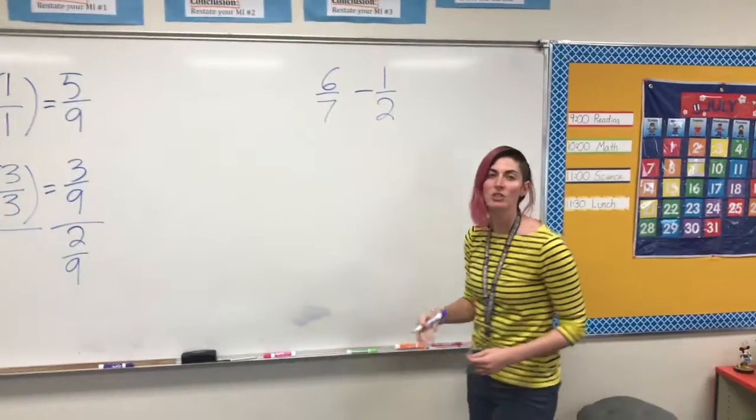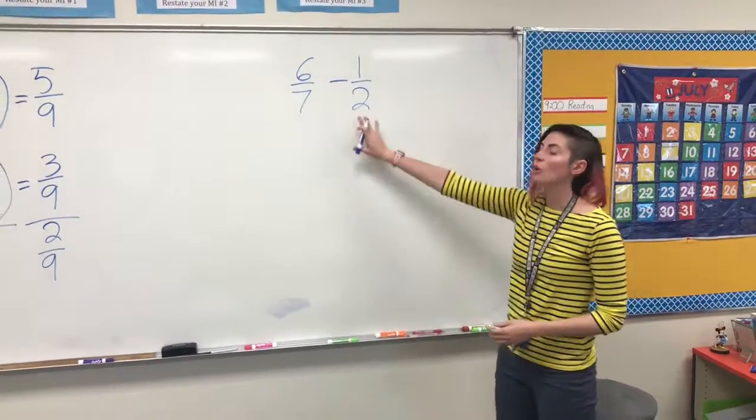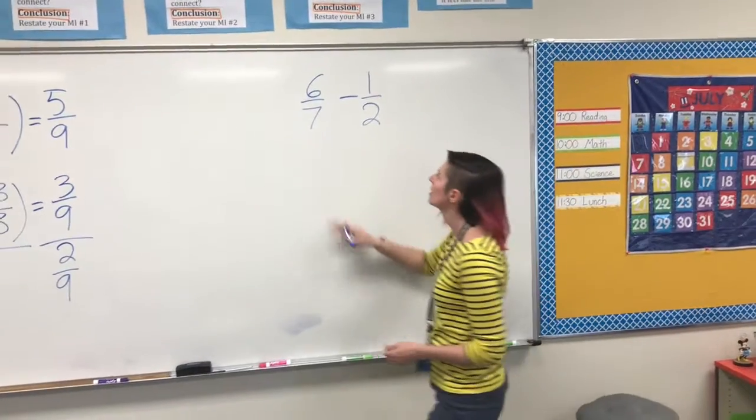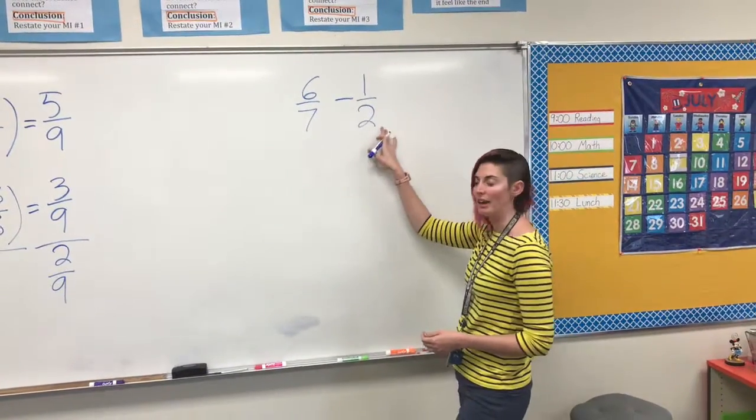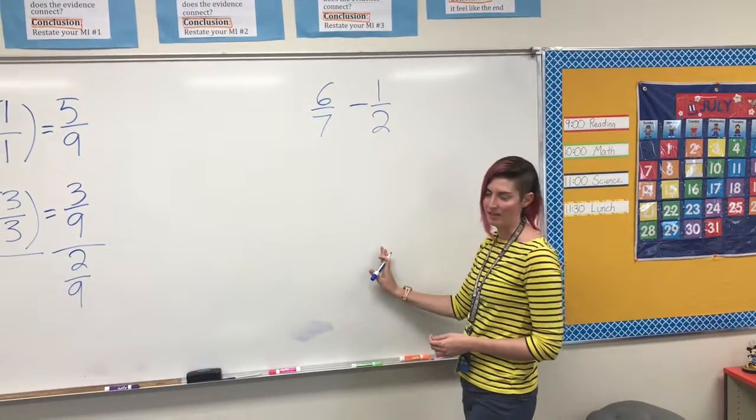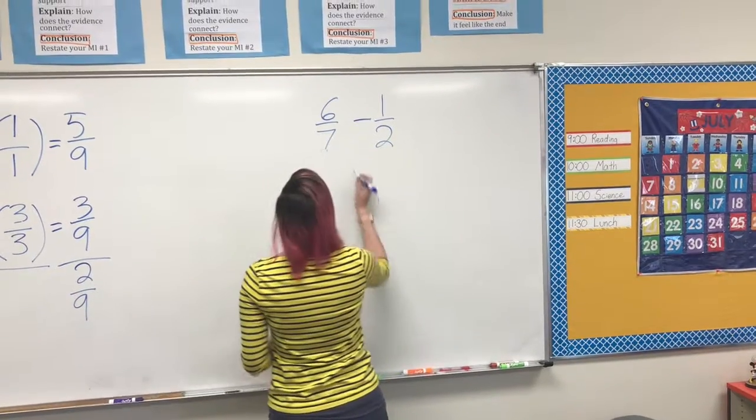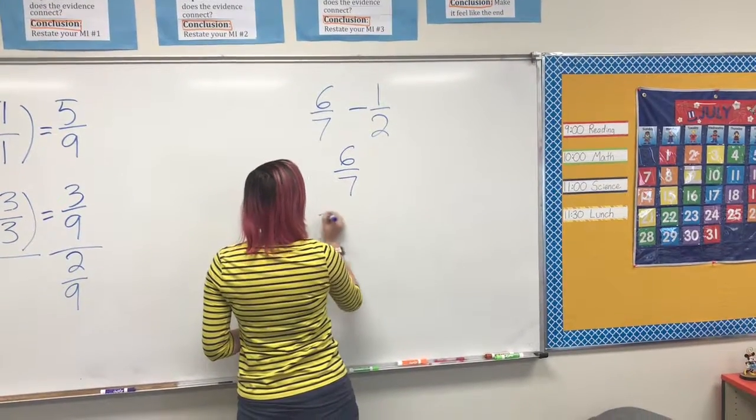Now, if your denominators don't fit in equally, we're going to be working on a problem where that happens. Here we have 6 7ths minus 1 half. Horizontal. Got to write it vertically. So 6 7ths minus 1 half.